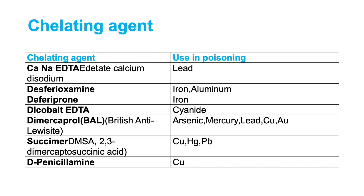Chelating agents are used in many types of poisoning in the emergency room and medical wards. Relevant poisons include lead, iron, aluminum, cyanide, arsenic, mercury, and copper. We have chelating agents that can treat these conditions, though detailed discussion of each treatment is beyond the focus here. We are mainly discussing radiological features of acute poisoning.